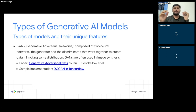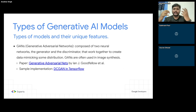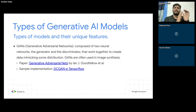The discriminator at one point will fail — it won't be able to tell the generated image is fake and will say 'yes, this is a real image.' That is when the model has learned to generate images of a dog. This is how a GAN works: it takes a lot of input, does many iterations between the generator and discriminator, and eventually the generator learns the correct parameters to use to generate real-looking images.